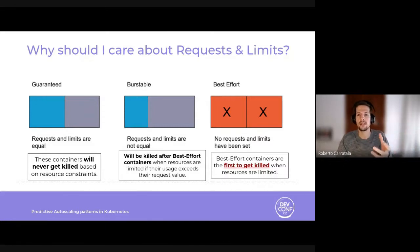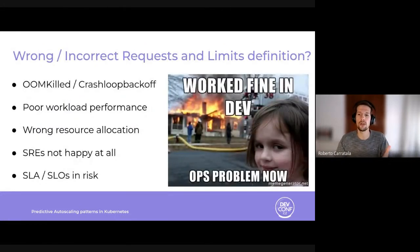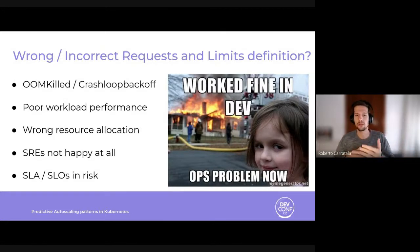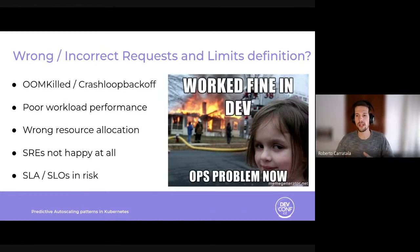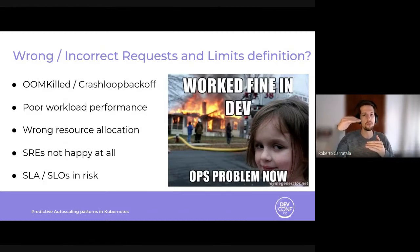What happens if you set wrong or incorrect request and limits definitions? If the application requirements change but you've set them statically without adapting them in the Kubernetes deployment definition, you may face issues such as out-of-memory OOMKill. Containers are OOMKilled because they are not allowed to use more memory than their memory limit. If a container allocates more memory than its limit and continues to consume beyond that, it will be terminated and restarted by the kubelet, affecting your application.